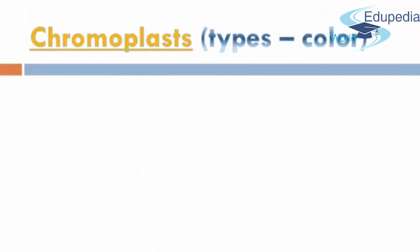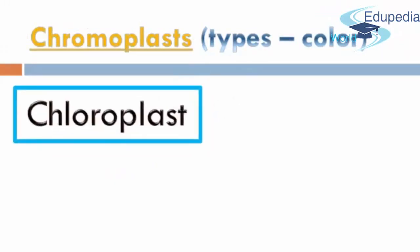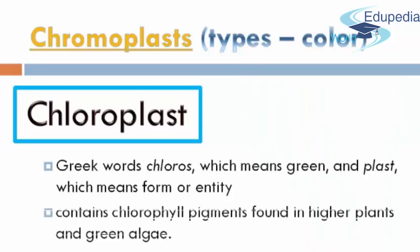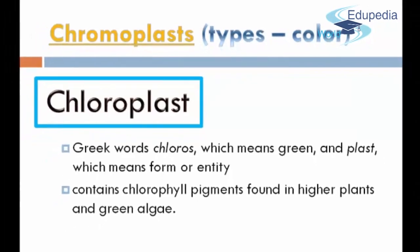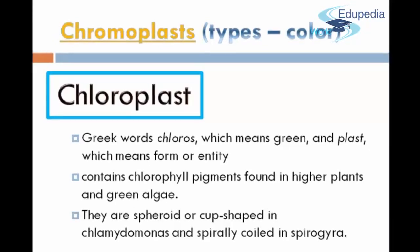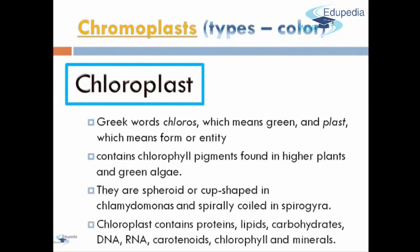Chromoplasts have three types according to its color. The first is Chloroplasts, and it is from the word Chloros, which means green, and Plast, which means form or entity. It contains chlorophyll pigments found in higher plants and green algae. They are spheroid or cup-shaped. Chloroplasts contain proteins, lipids, carbohydrates, DNA, RNA, carotenoids, chlorophyll, and minerals.